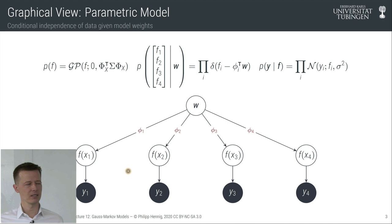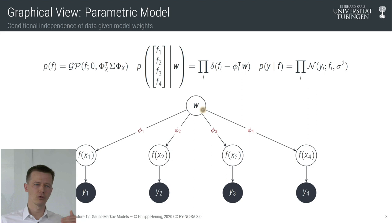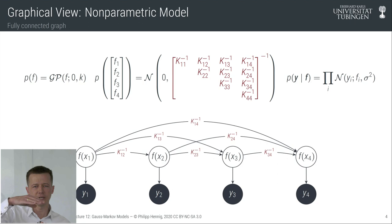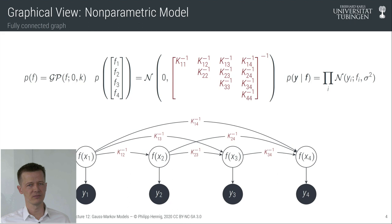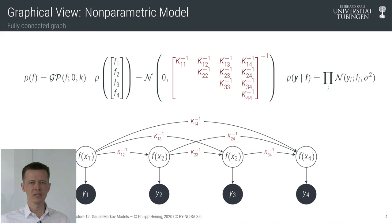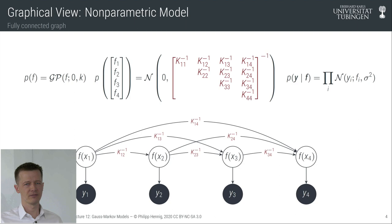The algorithms for Gaussian regression we've seen so far are not linear in n unless they have a finite set of features. In parametric models the inference is linear in n, but these models do not allow weights to change over time. In fully connected Gaussian process regression models, the computational complexity is cubic in the number of data points, so in a time series setting the cost would rise faster than data arrive, and you'd quickly be overwhelmed.